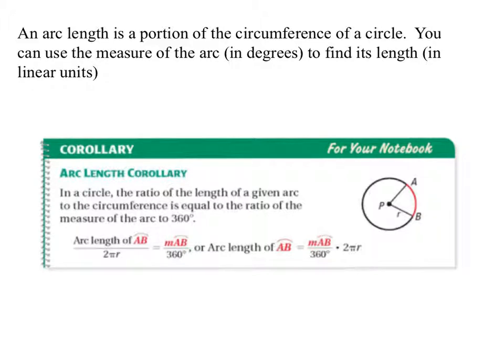An arc length is a portion of the circumference of a circle — it's a length. We've done a lot of measurements of arcs in degrees. This is a length, so it's a unit of length. If we had a ruler that could measure it, we would — but you can't measure an arc with a ruler. You can use the measure of the arc in degrees to find its length in linear units. It's a measurement of length — that seems to be the sticking point in this section.